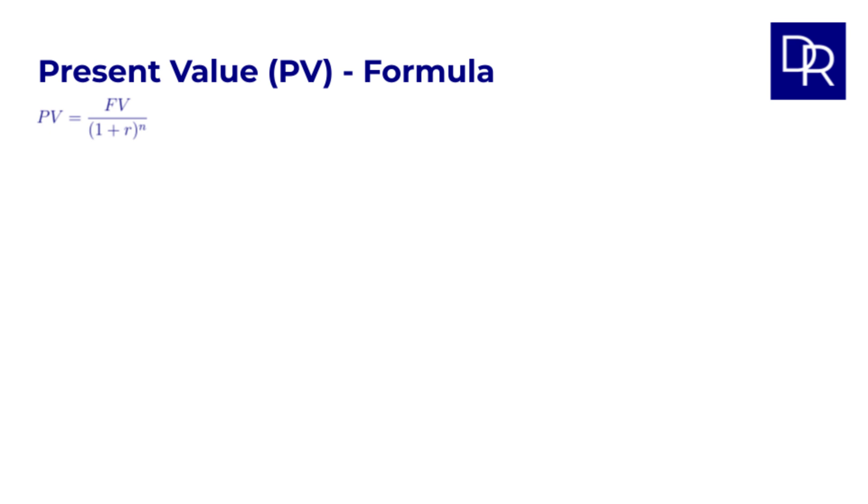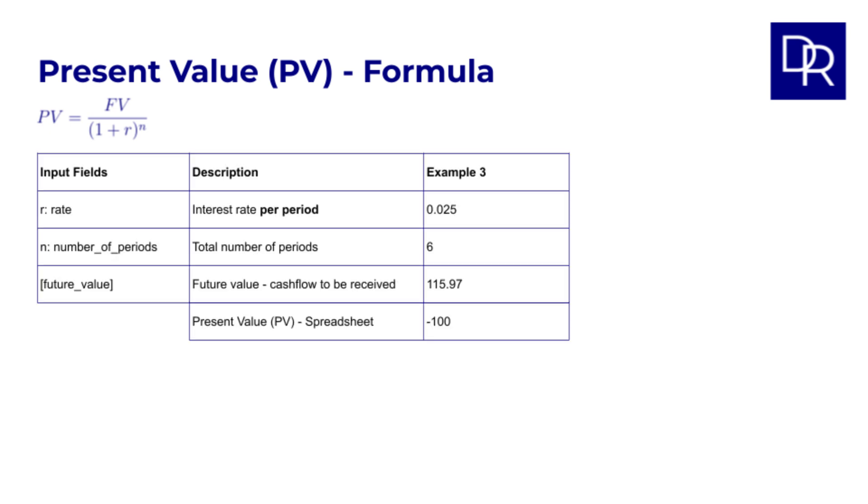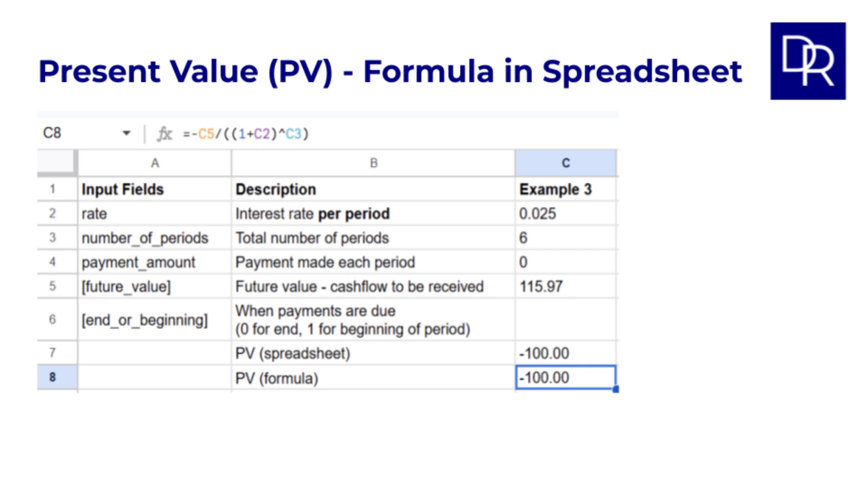The 115.97 was of course chosen to show that the PV function is just the inverse of the FV function. Just like with future value, it's important to understand the formula behind this calculation. The formula for present value is simply a rearrangement of the future value formula. PV equals FV divided by 1 plus R to the power of N. Let's verify the result of example 3. PV equals 115.97 over 1 plus 0.025 to the power of 6 equals 100. Again, the formula gives us the same answer as the PV function. The spreadsheet has added also the calculations with these formulas.